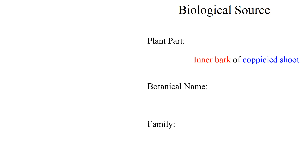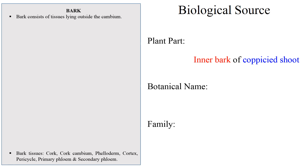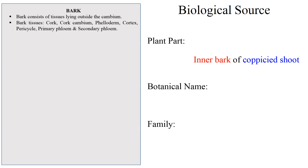First, coming to the bark. Bark is a non-technical term having different meaning in different aspects. In commercial sense, bark means tissue lying outside the cambium. A bark consists of tissues such as cork, cork cambium, phelloderm, cortex, pericycle, primary phloem, and secondary phloem.